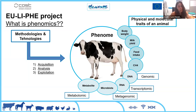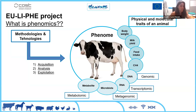We know that omics — like genomics and metagenomics — are the methods and techniques we use to study the genome and the microbiome. So we can define phenomics as the ensemble of all the methods and technologies for the acquisition, analysis, and exploitation of the phenome. Phenomics is emerging as a new technical discipline in biology and is getting very important in the livestock sector.